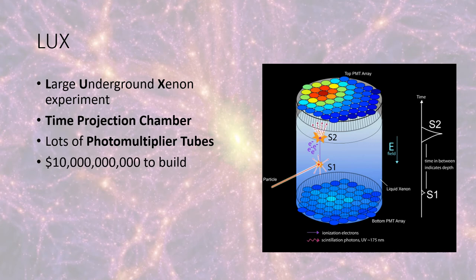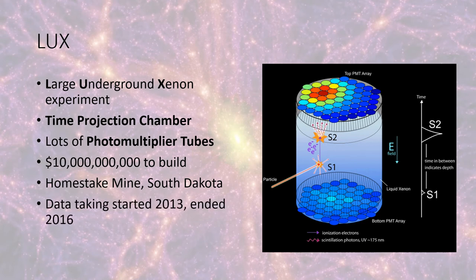After this, another bunch of experiments come along, but one in particular is LUX. LUX stands for Large Underground Xenon Experiment. It uses something called a time projection chamber and has a lot of photon multiplier tubes on the top and the bottom. It cost $10 billion to construct. It developed this interesting dual-phase detection system. It was located in the Homestake Mine of South Dakota. LUX started taking data around 2013, ended around 2016. It set leading constraints on dark matter limits and masses, and it found absolutely nothing again. So still some room for improvement.